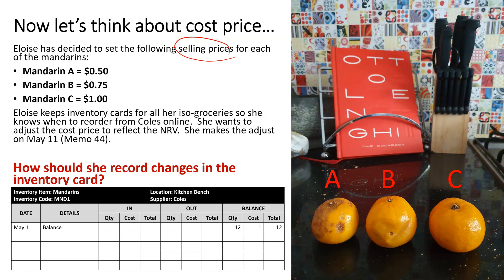Eloise, being the nerdy accounting teacher, keeps inventory cards for all of her ISO groceries so she knows when to reorder on Coles Online. She wants to adjust the cost price to reflect the NRV, and she makes the adjustments on May 11. When we're thinking about how to record this, our inventory card shows 12 mandarins each costing $1 for a total of $12.